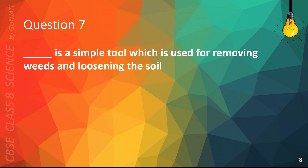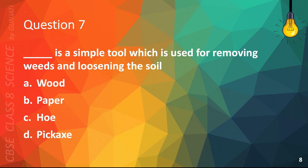Question 7. Blank is a simple tool which is used for removing weeds and loosening the soil. A. Wood, B. Paper, C. Hoe, or D. Pickaxe. The correct answer is C. Hoe.